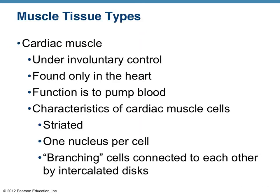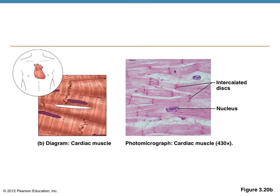Cardiac muscle — the characteristics are listed here. It's involuntary for the most part; your heart beats on its own and it's not something you have to think about. The visual characteristics you would look for: you would still find the striations, but the big deal here is looking at the branching and the connections between cells. Switching to the view of the cells, the striations are still there — the alternating light and dark bands.